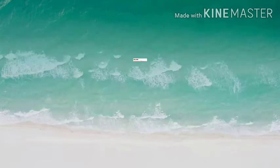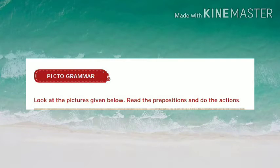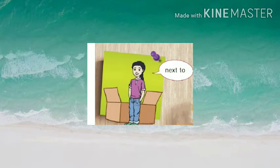Now in your textbook, they have given a few pictures to identify what are the prepositions found in the picture. They have given some actions and asked us to identify the prepositions for the given sentences. In the first picture, the girl is near to the box — that is the cardboard box. Whenever she stands near to the cardboard box, we can use the preposition 'next to'.